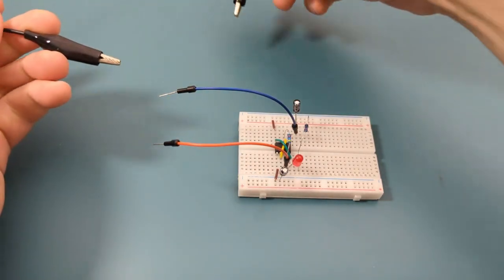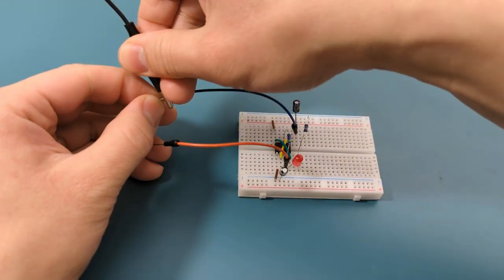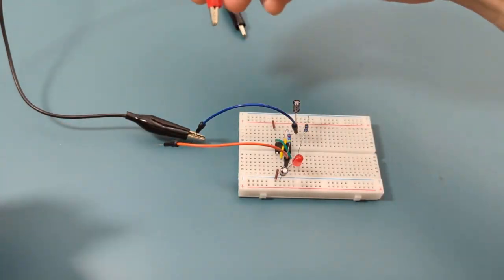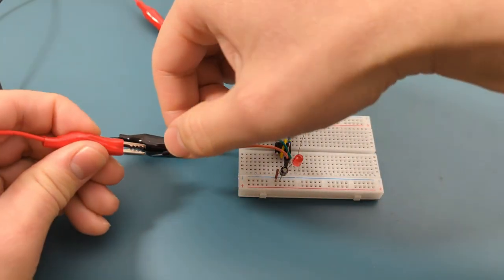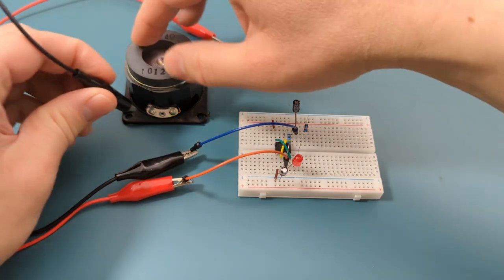Connect an alligator clip to the end of the jumper wire. Connect another alligator clip to the other end of the jumper wire. Connect the alligator clips to the 5 watt speaker.